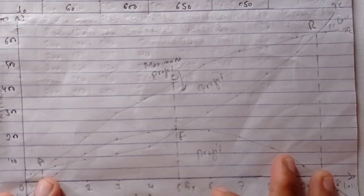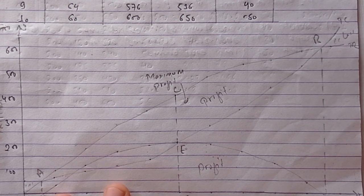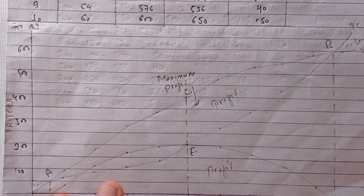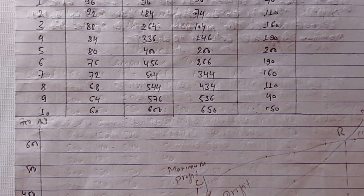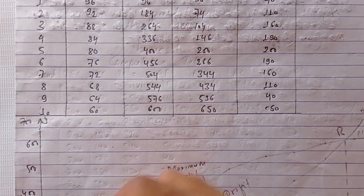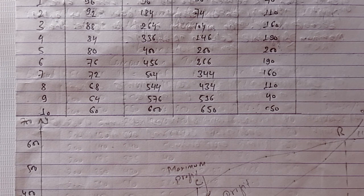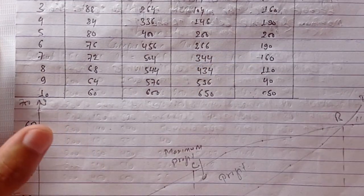Now we have to create a graph with the Y-axis showing TR, TC, and Profit, and the X-axis showing output. We have already computed the table for 0 to 10 units and will present the figure in the next part.